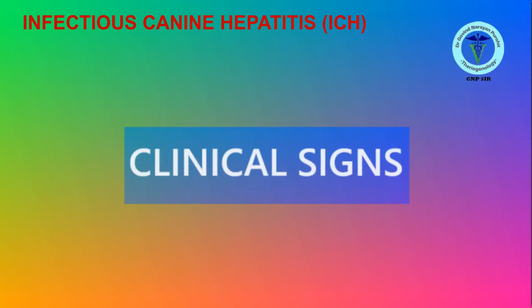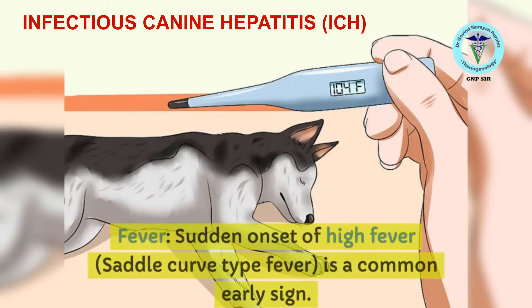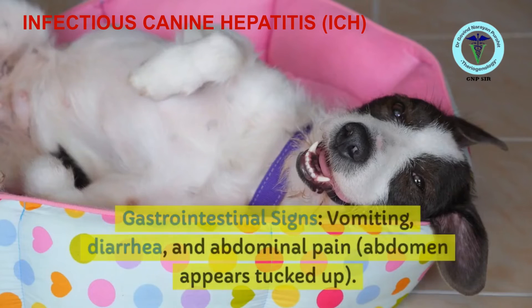Now let's discuss the clinical signs of the disease. Fever: there is a sudden onset of high fever, and a saddle curve type fever is a common early sign of the disease.